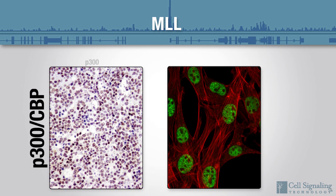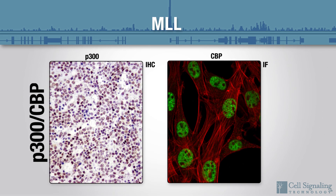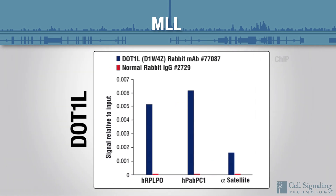P300 and CBP are functionally related proteins that drive gene expression through histone acetylation and can form additional MLL fusion proteins. DOT1L interacts with MLL translocation partners in the super elongation complex and is required for initiation and maintenance of MLL rearranged leukemias.